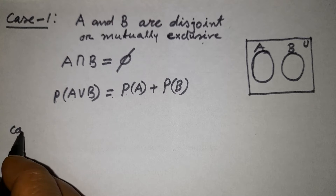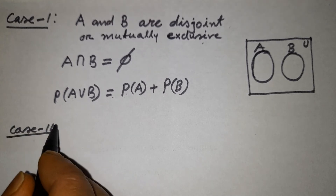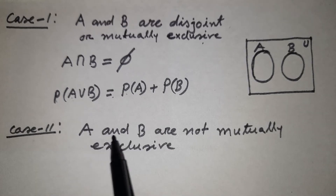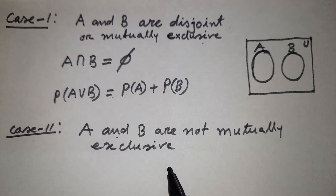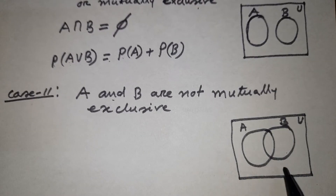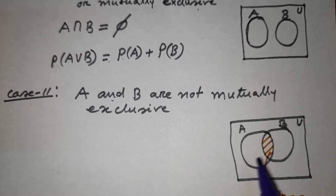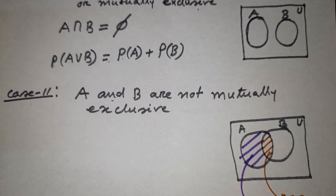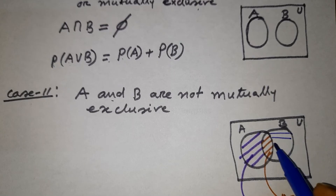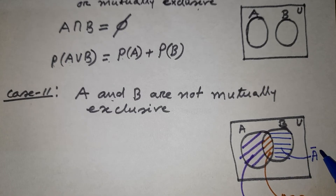Now Case 2: if A and B are not mutually exclusive. The Venn diagram of these two events is shown here, where this portion is A intersection B, this portion is A intersection B complement, and this portion is A complement intersection B.